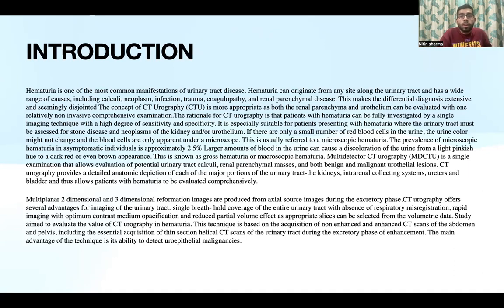Hematuria can be of two types: microscopic or macroscopic. Microscopic hematuria is when it is only apparent under a microscope and the color of the urine does not change. When the color of the urine changes to brown or red, it is called gross hematuria or macroscopic hematuria.